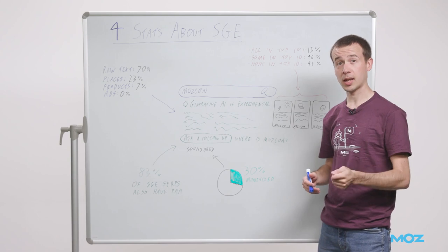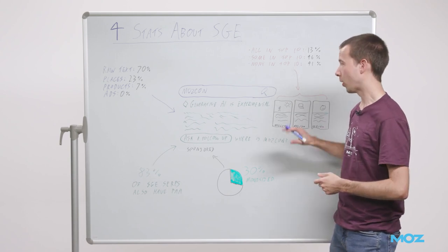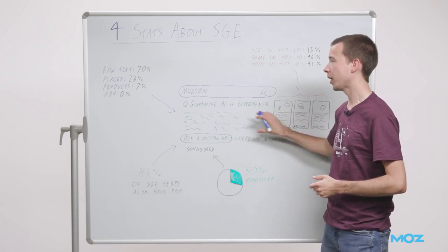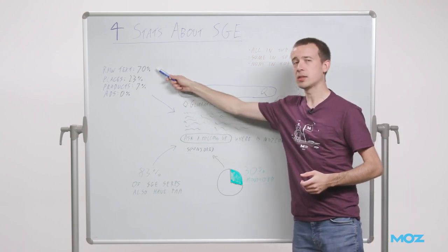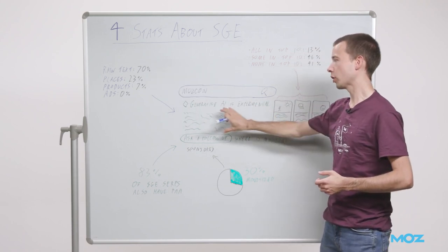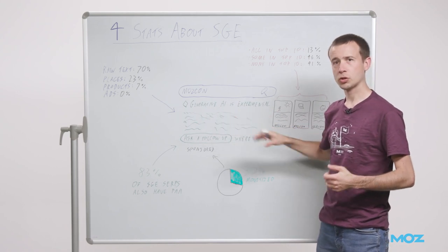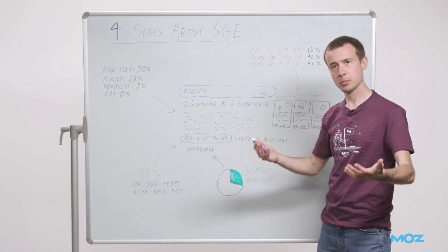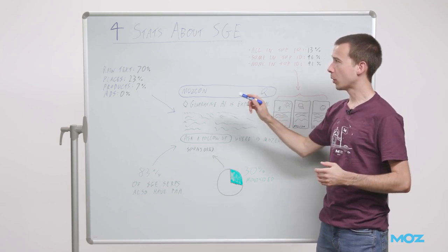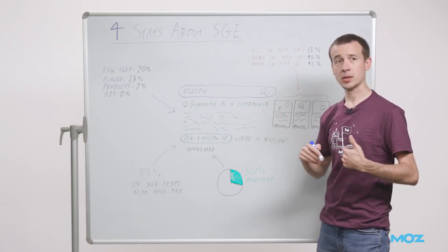That brings me to the last stat I want to share, which is about what you actually have in the SGE. In 70% of cases, this is just raw text, like a featured snippet, except obviously AI-generated.